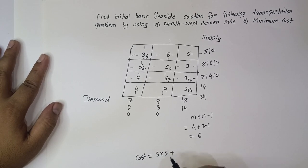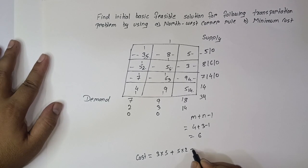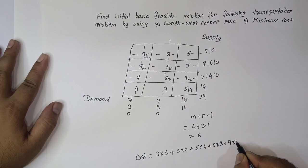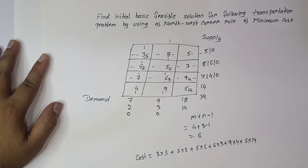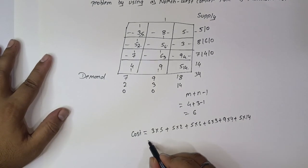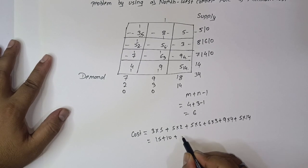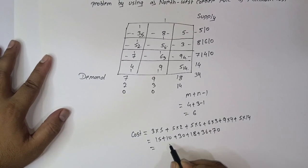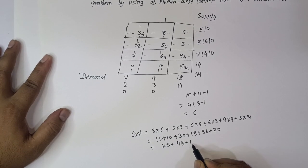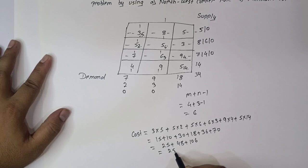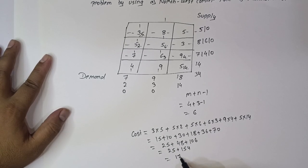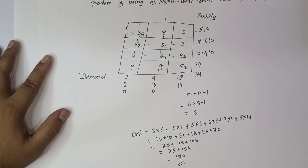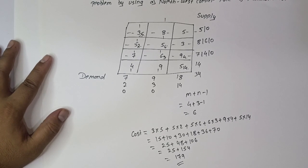We have reached the initial basic feasible solution using the North West Corner Rule. The total transportation cost is: 3×5 + 5×2 + 5×6 + 6×3 + 9×4 + 5×14 = 15 + 10 + 30 + 18 + 36 + 70 = 179. So the cost of transportation using the North West Corner Rule is 179.